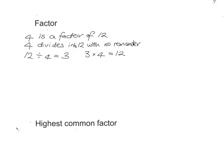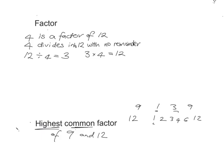Of course, there are lots of other factors of 12 — for example, 3 is a factor of 12. Highest common factor: we want to find the highest common factor of 9 and 12. We want the biggest factor that's common to both. The factors of 9 are 1, 3, and 9; the factors of 12 are 1, 2, 3, 4, 6, and 12. They both have 1 and 3 as factors, but we want the highest one, so the answer is 3.